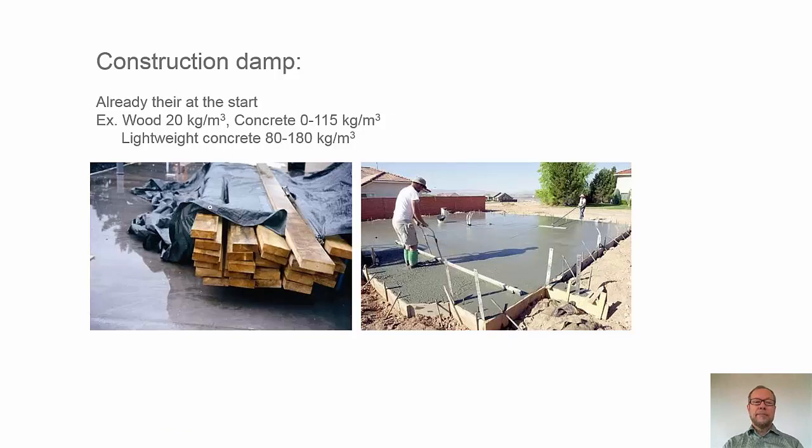Construction damp. On the left-hand picture, we see wood that has been exposed to precipitation. And if this is built into the building, there will be an excess amount of moisture that has to be dried out later on. But also, if we have wood in a regular storage facility without rain, there will be an excess amount of moisture in the wood that dries out. We're talking about the regular case without rain on the wood, like 20 kg per cubic meter.